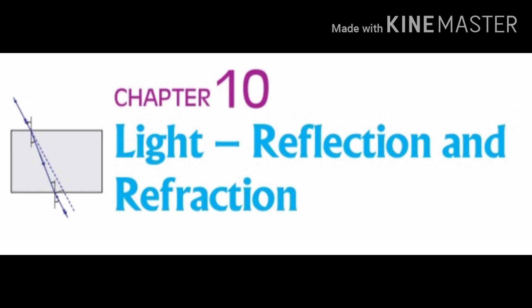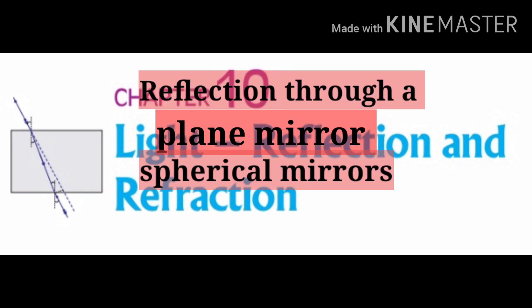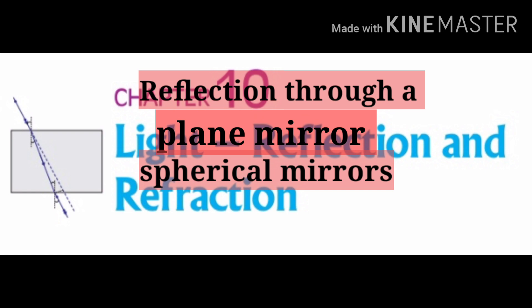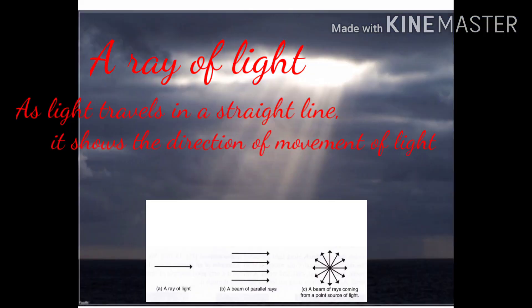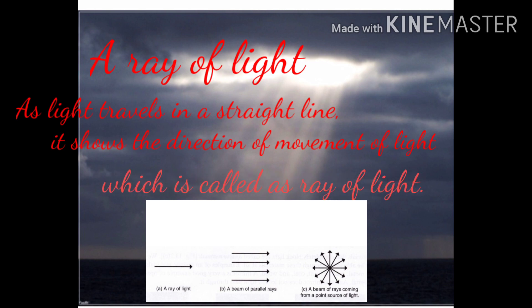In today's session we will discuss about reflection of light through a plane mirror and spherical mirrors. First of all, what is a ray of light? As light travels in a straight line, it shows the direction of movement of light, which is called a ray of light.